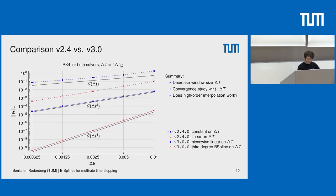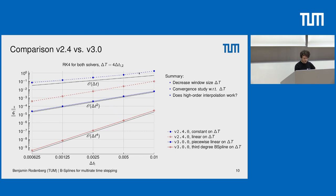Let's look at some results comparing the version 2.4 and version 3 approaches. Version 2.4 uses constant or linear interpolation within one time window. Version 3 uses samples in between for piece-spline or piecewise linear interpolation. In the first study we decrease the time window size as a convergence study, always doing four sub-steps within the window, checking whether high-order interpolation works. With Runge-Kutta 4, the dashed lines only reach first or second order, but if we go for piece-splines constructed from subcycling, Runge-Kutta 4 works. We're dealing with the simple oscillator case: two masses and a spring.